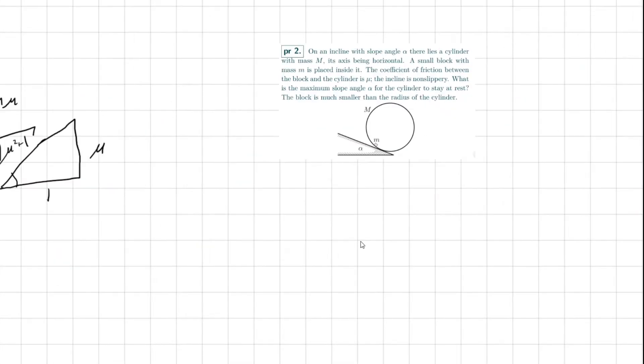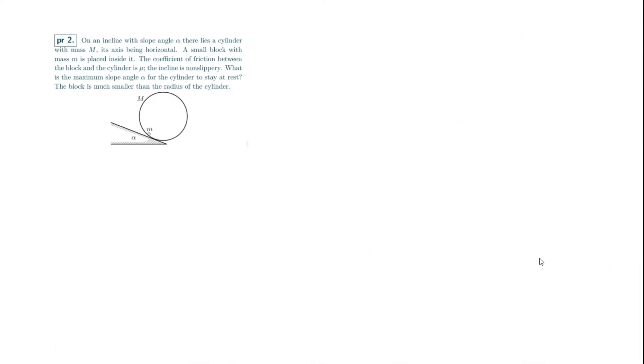Problem number two is also from the statics section. On an incline with slope angle α there lies a cylinder of mass M, its axis being horizontal. A small block of mass m is placed inside it. The coefficient of friction between the block and cylinder is μ; the incline is non-slippery. What is the slope angle α for the cylinder to stay at rest? The block is much smaller than the radius of the cylinder.